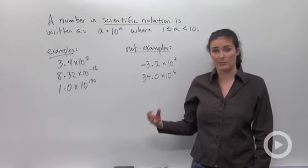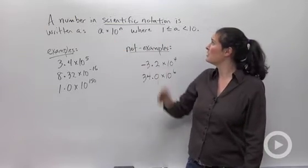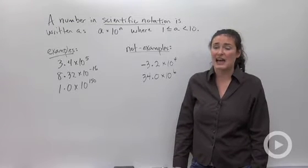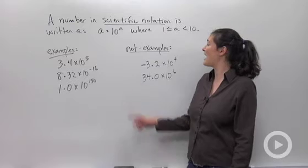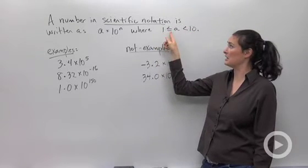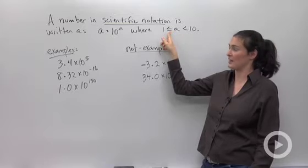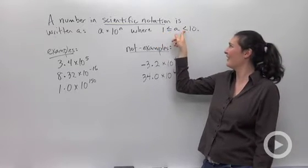The word scientific sounds like it only belongs in science class, but you use this in math also. A number in scientific notation is written as a times 10 to the nth power, where a is between 1 and 10. Let me try that again: 1 is less than or equal to a, or less than 10.